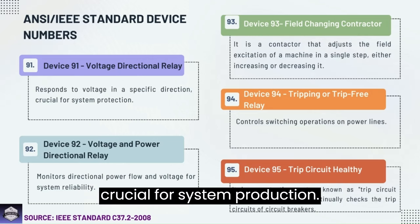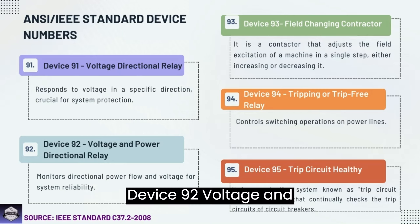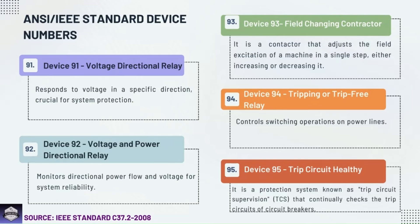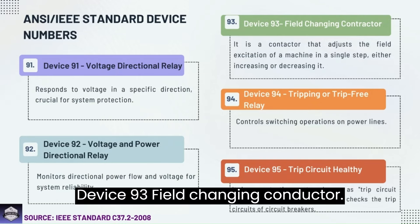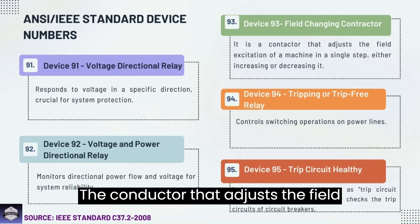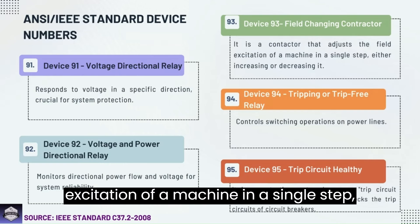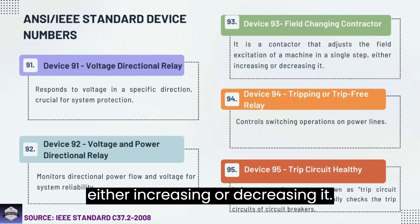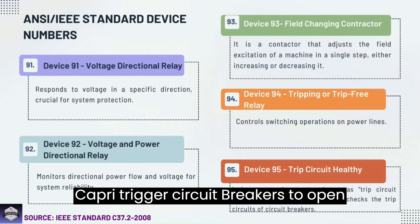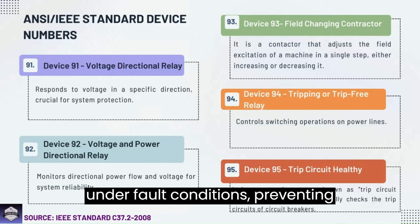Device 92: Voltage and power directional relay — monitors directional power flow and voltage for system reliability. Device 93: Field changing contactor — a contactor that adjusts the field excitation of a machine in a single step, either increasing or decreasing it. Device 94: Tripping or trip-free relay — triggers circuit breakers to open under fault conditions, preventing damage.